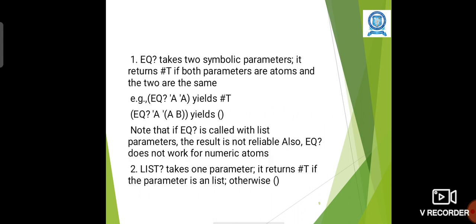Predicate functions: eq? takes two symbolic parameters. It returns true if both parameters are atoms and the two are the same. Example: eq? A A yields true. eq? A B yields false.